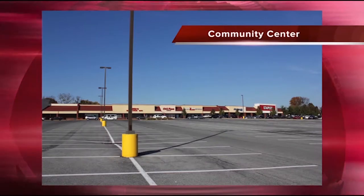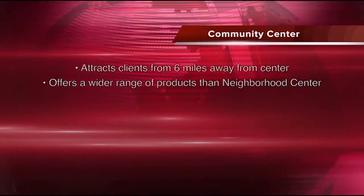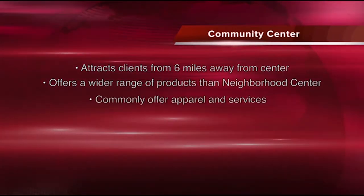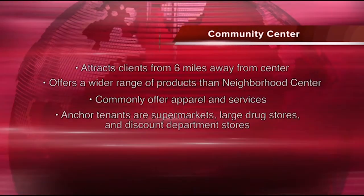A community center has a wider draw stretching up to six miles from the center and typically offers a wider range of products than a neighborhood center. Community centers often offer apparel and services. Common anchor tenants are supermarkets, large drug stores, and discount department stores. Community center tenants can sometimes include big box, category-dominant retailers such as Home Depot, Lowe's, Best Buy, Toys R Us, TJ Maxx, or other big box retailers. These centers come in many configurations — some are straight-line strips, while others may be laid out in an L or U shape. Many of these centers are themed or targeted at particular groups.